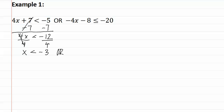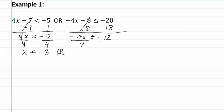This is going to be 'or' the next statement. We add eight to both sides, giving us negative 4x is less than or equal to negative twelve. We then divide both sides by negative four. Since we divided by a negative, we need to flip the sign and make it greater than or equal to, so x is greater than or equal to three.